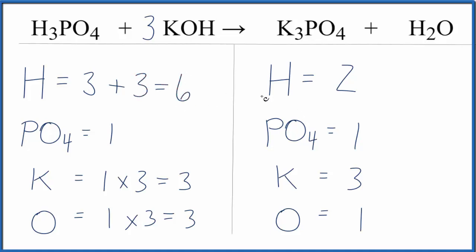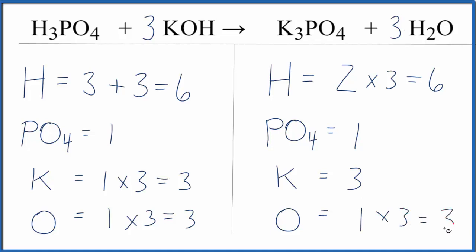Let's fix the hydrogen. If I put a three in front of the H2O, then two times three gives me six hydrogens — so those are balanced. And then for water, one times three gives me three oxygens, which balances the oxygens.